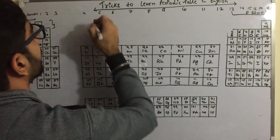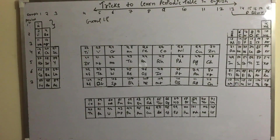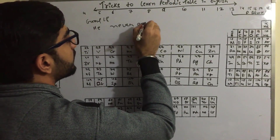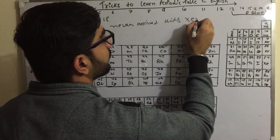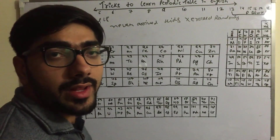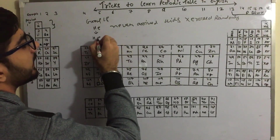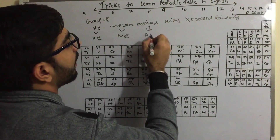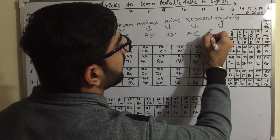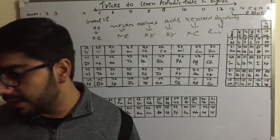Finally, Group 18 is the last group of p-block elements. The mnemonic is: 'He never arrived, kid zero xeroxed randomly.' 'He' means Helium, 'never' means Neon, 'arrived' means Argon, 'kid' means Krypton, 'xeroxed' means Xenon (Xe), and 'randomly' means Radon (Rn). This is how you learn Group 18.